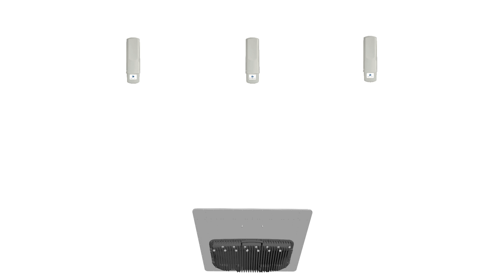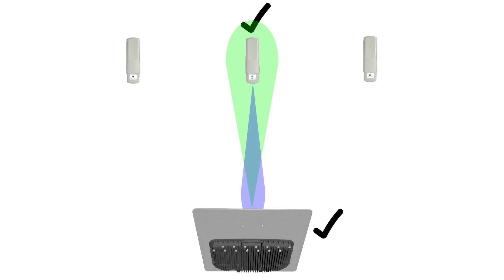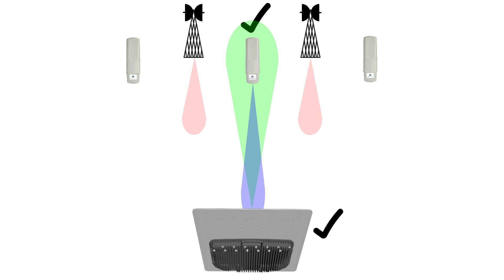The access point forms a narrow beam which has high gain in a specific direction, rather than across the wide angle used in conventional systems. This narrow beam points towards the subscriber the access point wants to receive data from, intersecting with the subscriber's beam and receiving its data, whilst at the same time mitigating interference from interferers because the beam formed by the access point has low gain towards the beams from the interferers, deafening the access point to their signals.